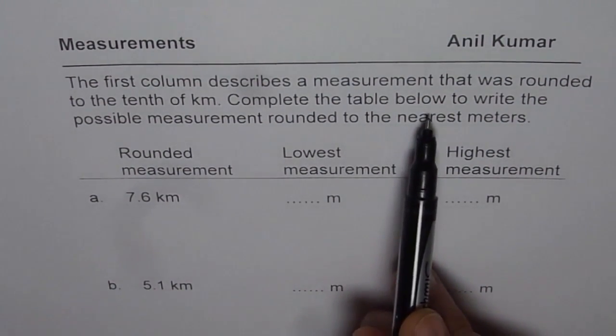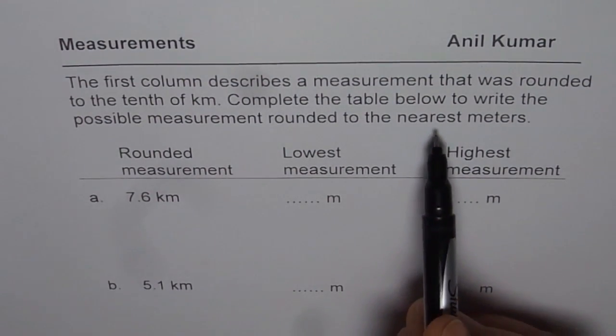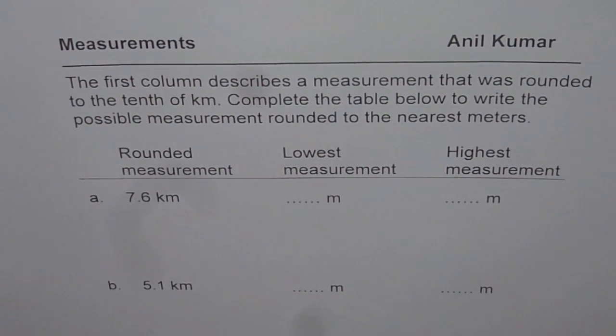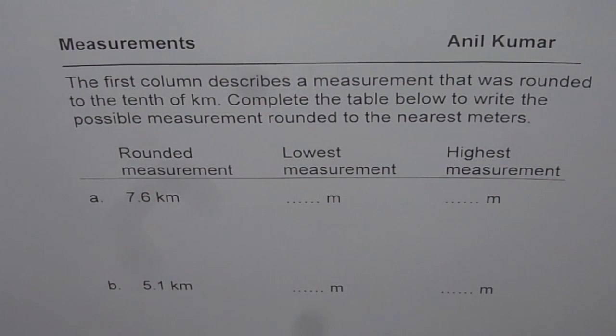Complete the table below to write the possible measurement rounded to the nearest meter. So imagine that the measurements were actually done in meters and then they were rounded to kilometers. So what could be the lowest and the highest measurements? This is what you need to fill up in this table. I hope the question is clear.